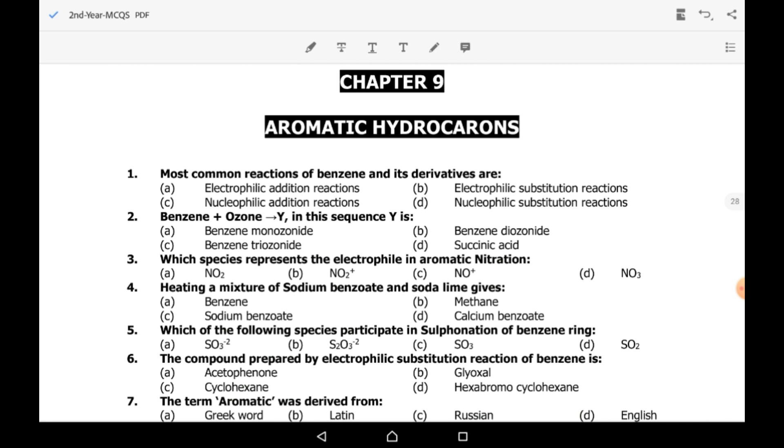Going to first MCQs. Most common reactions of benzene and its derivatives are electrophilic substitution reactions. So B option is correct. Next, benzene plus ozone forms Y. In this sequence, Y is benzene triozonide.